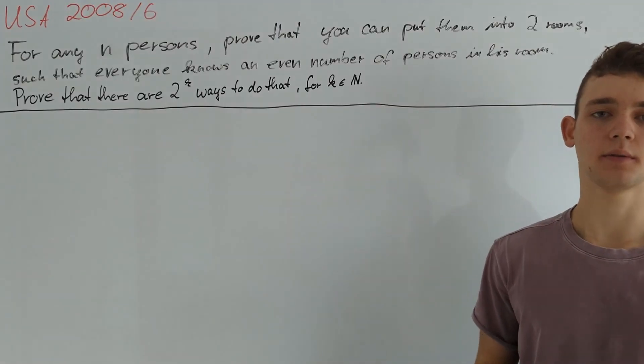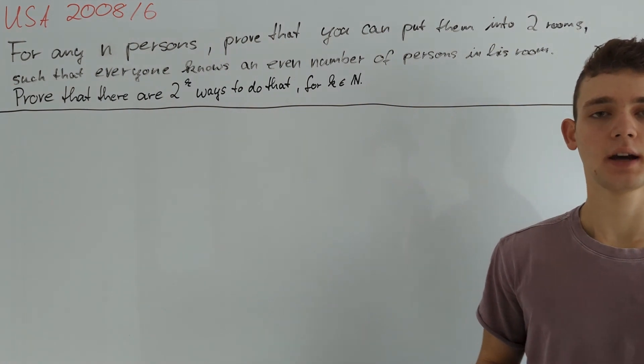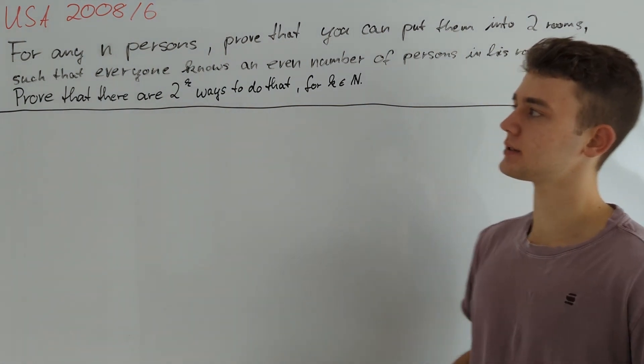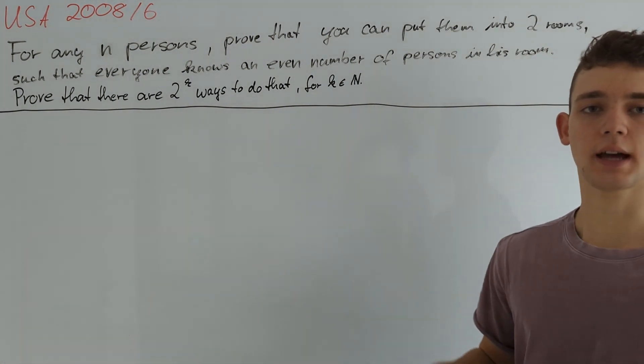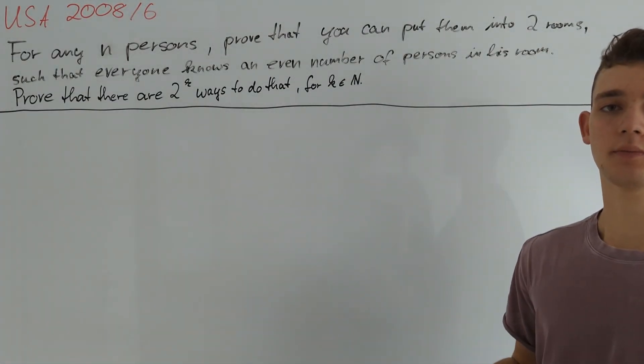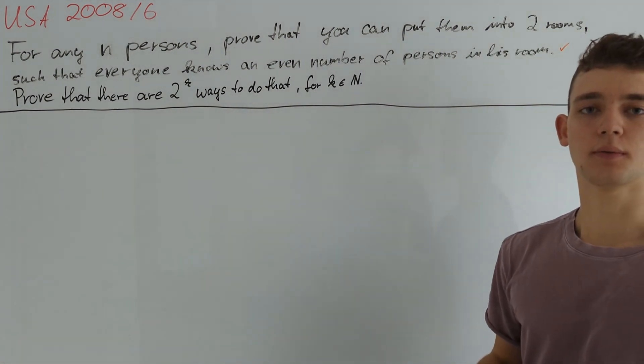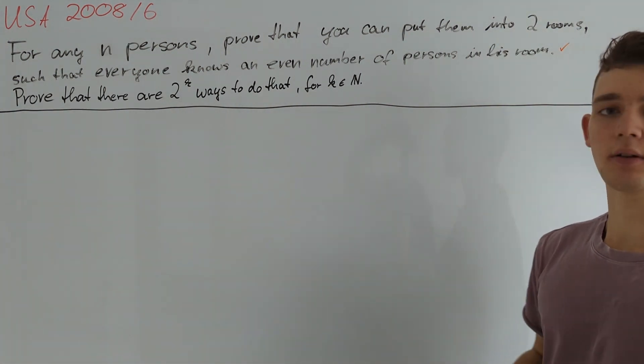Hey guys, in this video I will finish my proof of USA 2008 problem 6. After proving in last videos that it is possible to put n people into two rooms such that everyone knows an even number of persons in his room, we will show in this video that the number of ways to do that is actually a power of 2.